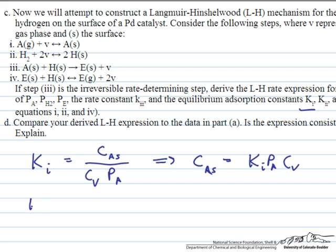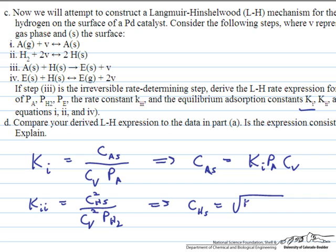K₂ is equal to, again, products over reactants: C_HS squared, because we form two of them, over the concentration of vacant sites squared and the partial pressure of hydrogen. Solving for the surface hydrogen species C_HS, that equals the square root of K₂ times the partial pressure of hydrogen times the concentration of vacant sites.